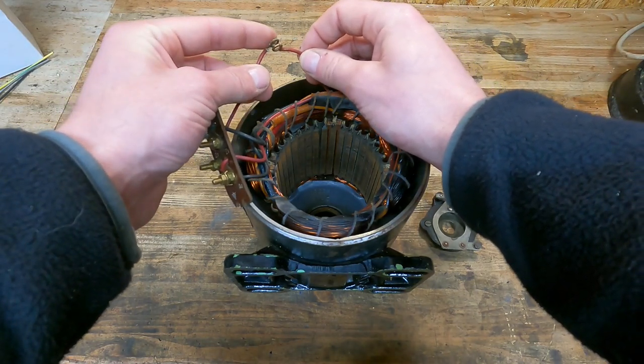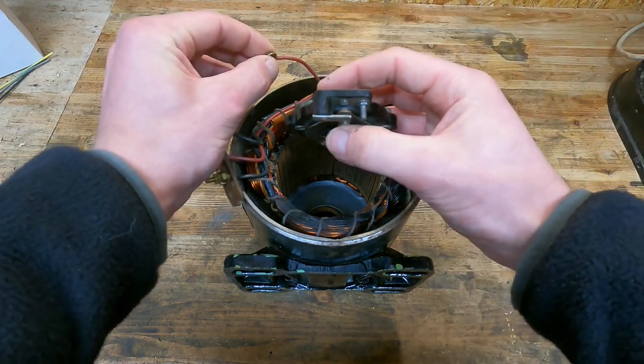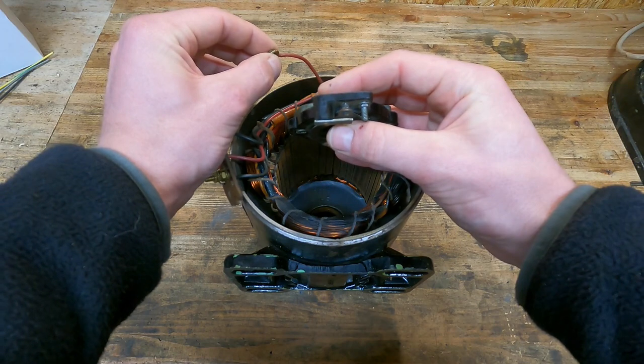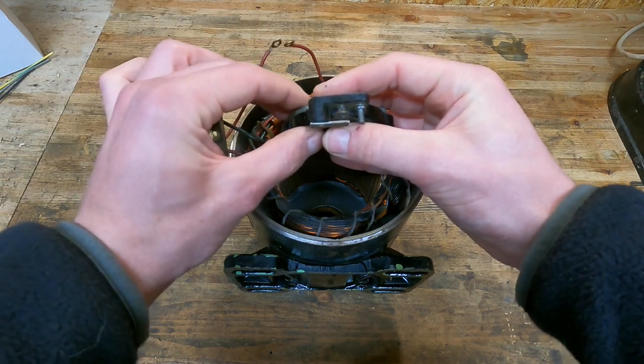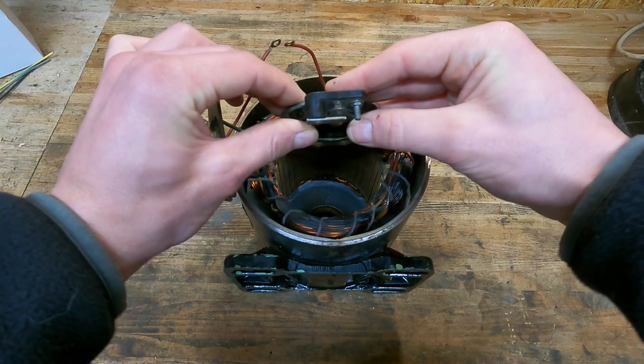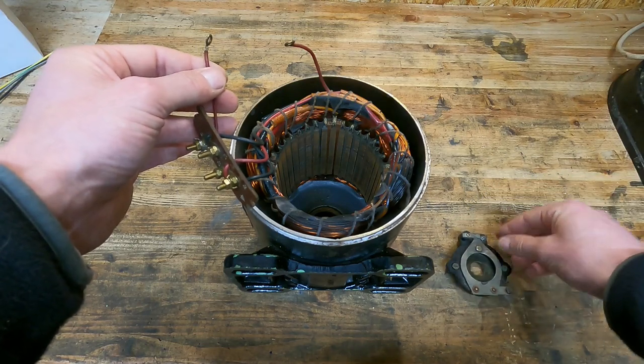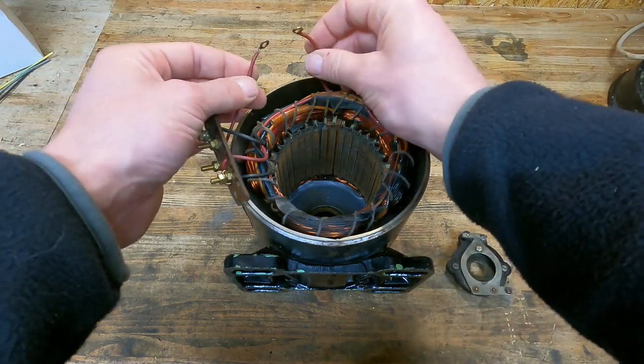These two cables on the start winding are normally joined by the centrifugal switch. This is the start position for it. As the motor gets up to speed, the centrifugal switch allows this to open up, which disconnects these two cables and stops power going to the start winding.